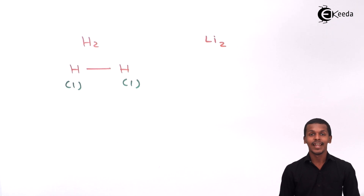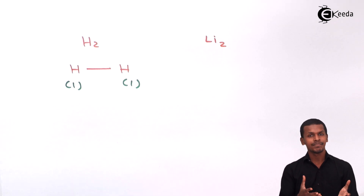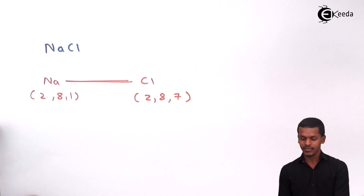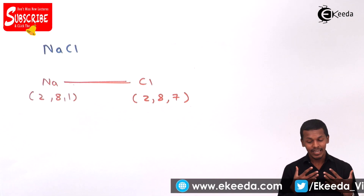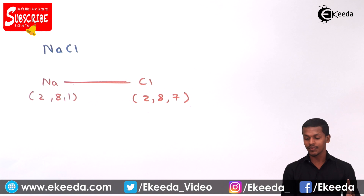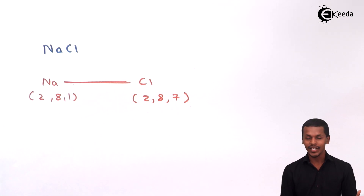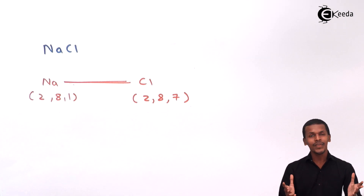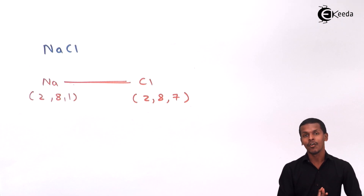Now let us talk about the significance of the octet rule. The main significance is it gives detail about the valency. In the NaCl example, sodium forms one bond by giving its electron — so the valency of sodium is one. Chlorine also forms one bond with sodium by gaining one electron — so the valency of chlorine is also one. This is how we can discuss the various bonds being formed and thereby determine the valency of a particular atom.